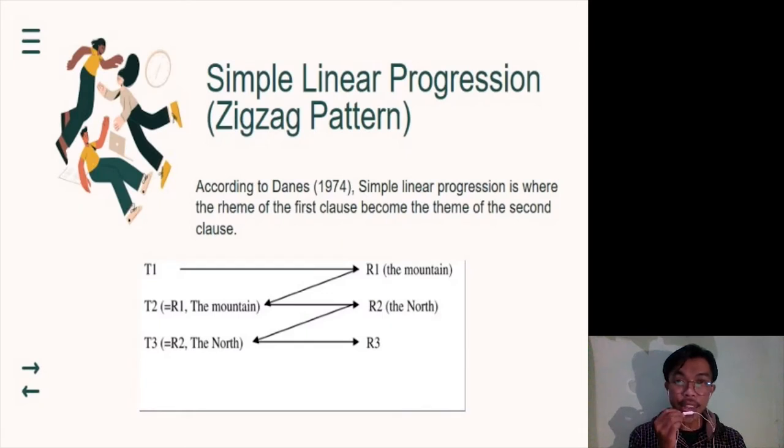Alright, so now I want to explain about Simple Linear Progression or Zigzag Pattern. According to Danes 1974, Simple Linear Progression is where the rheme of the first clause becomes the theme of the second clause. Instead of just repeating the ideas and information in the themes, we can use the information in the new as the next theme. As with repeating the theme, we can repeat the information we take from the new almost exactly or by using a synonym or related idea. In some texts, the reader has picked off the ideas in the new of the preceding sentences and turned them into the themes of the following sentences. This keeps a very tight thread of ideas running through the text.